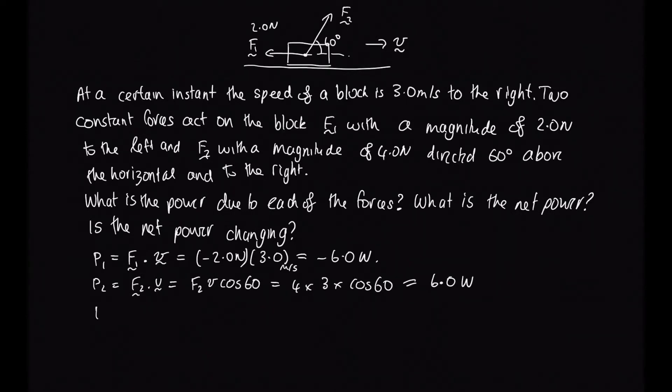Now the net power we just get by summing the powers, so this is equal to minus 6 plus 6, so that's equal to zero. So the net power is zero. We don't have a net transfer of energy with time.